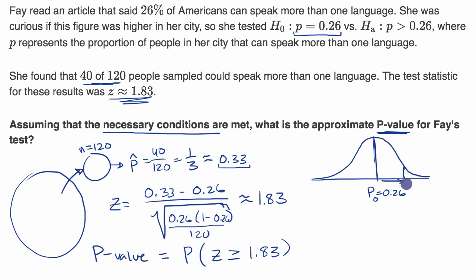And this result that we got from our sample is 1.83 standard deviations above the mean of the sampling distribution. So 1.83. So that would be 1.83 standard deviations. And so what we want to do, this probability is this area under our normal curve right over here.